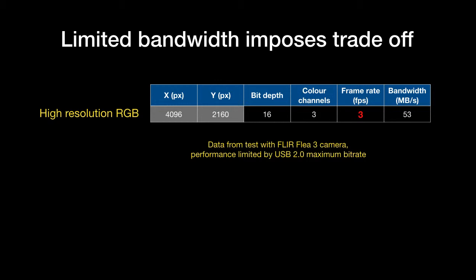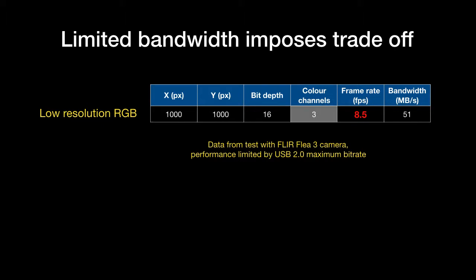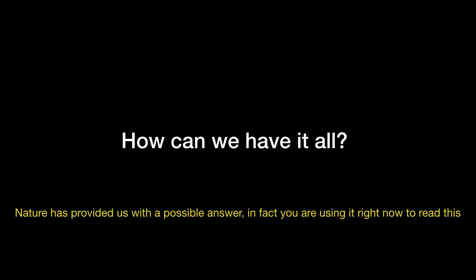As mobile systems are resource constrained, we must trade one trait for another. Visual acuity for frame rate. Spectral sensitivity for more frame rate. But how can we have it all?